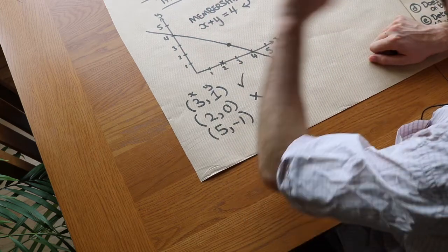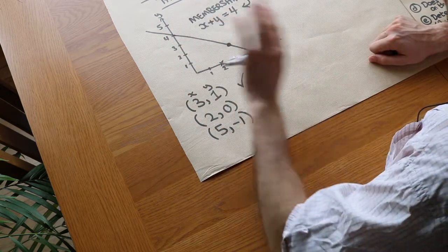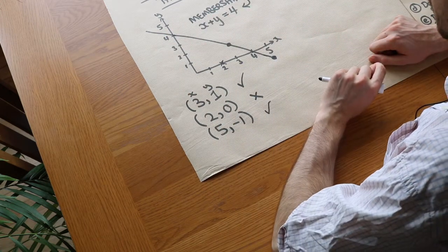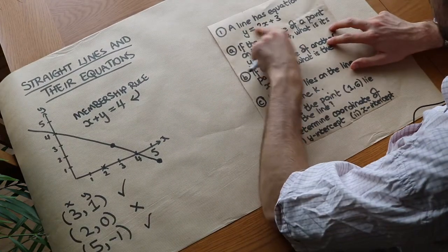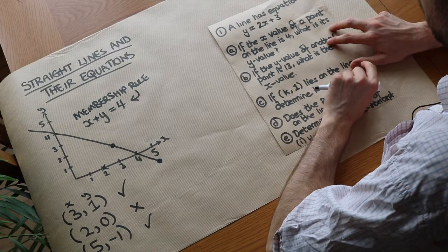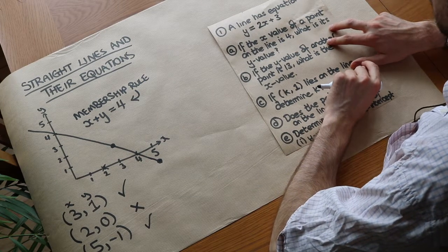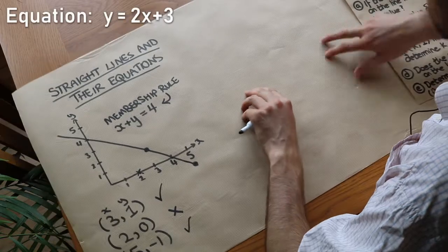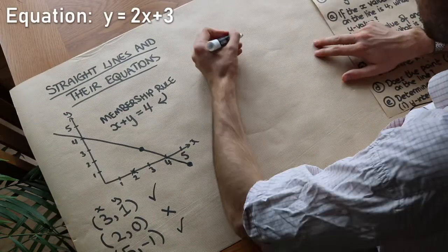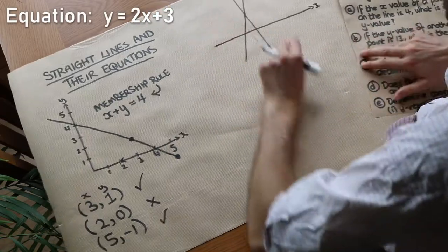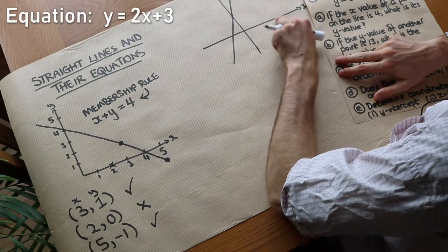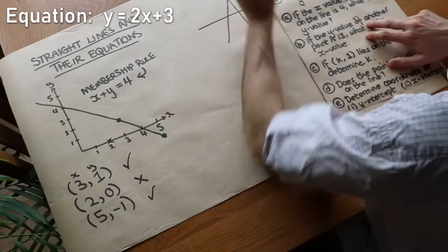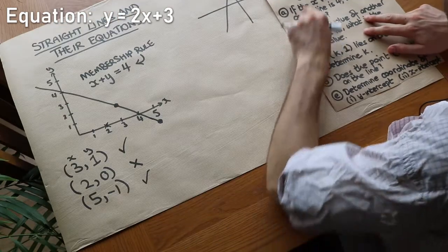This is true of all lines that you could draw — not just straight lines, it applies for all graphs. Now I've got a few questions to do with this line here. A line has the equation y equals 2x plus 3. I'll do a very quick approximate sketch just to give you an idea of what's happening, and we want to answer these questions.